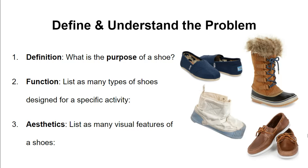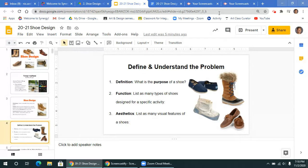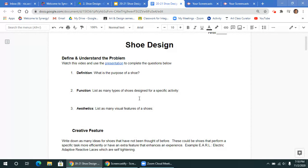Third, aesthetics: list as many different visual features of a shoe. Think about what the shoe looks like, what's on it, what it's made out of, and what the different pieces are, then list those features down. You're going to be listing those in your design packet right here, right here, and right here.